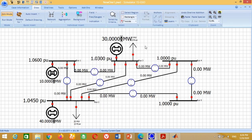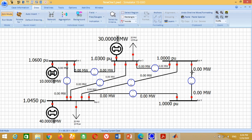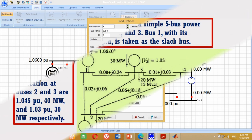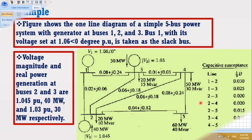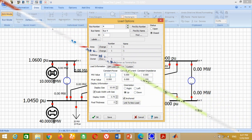Now we need to connect the load at Bus 4. Take the load and connect it at Bus 4. A window will appear. From the example data, the active and reactive load at Bus 4 is 50 MW and 30 MVAR respectively. Therefore write 50 here, 30 here and press OK.